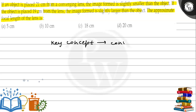Yahan par jo concept use karenge wo convex lens ki hai. Jaise ki humse yahan kaha gaya hai ki jo object hai wo humne place kiya hai 21 centimeter par, aur jo image banti hai wo slightly smaller hai object se. So we know that our image is slightly smaller when we have objects beyond 2F. So this distance of 21 centimeter is basically beyond 2F.